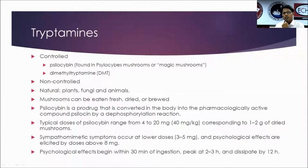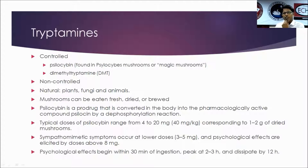Coming to tryptamines, there are controlled and non-controlled tryptamines. Under controlled tryptamines, psilocybin is the main compound, present in psilocybin mushrooms — also called magic mushrooms. Mushrooms can be eaten fresh, dried, or brewed. Psilocybin is a prodrug; after consumption it is converted into psilocin, the pharmacologically active compound. A typical dose of psilocybin ranges from 4 to 20 mg, corresponding to 1 to 2 grams of dried mushrooms. Sympathomimetic symptoms occur at lower doses, and psychological effects are elicited at doses of about 8 mg. Psychological effects begin within 30 minutes of ingestion, peak at around 2 to 3 hours, and disappear by 12 hours.